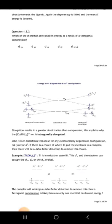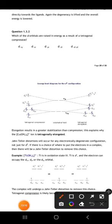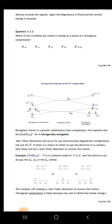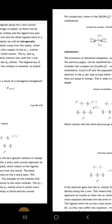So we have two cases: tetragonal elongation and tetragonal compression. In elongation, greater stabilization occurs compared to compression. These apply to electronically degenerate states — not just d⁹ but also d⁴. In compression, the dx²−y² is the relevant choice. That covers the Jahn-Teller distortion.